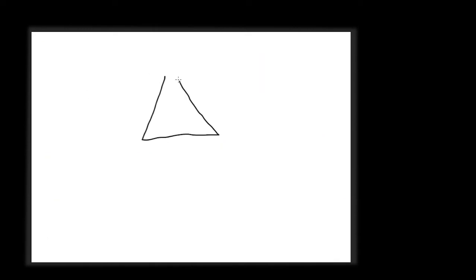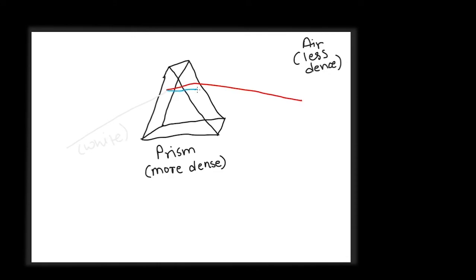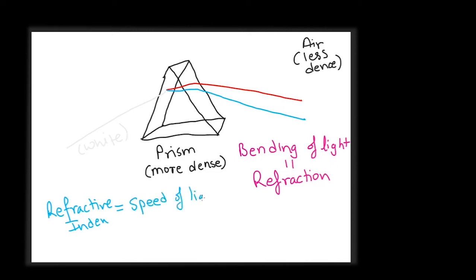A prism has two triangular faces and three rectangular faces and is made of a transparent, optically denser medium than air. When white light travels from one transparent medium to another transparent medium which is of a different optical density—which means lower or higher refractive index—the light rays bend. The bending of light, also called refraction, happens due to the change of speed of light in the two mediums. This change of speed is different for different frequencies, and hence the bending of different component colors is by different amounts, which results in separation of white light into spectrum.